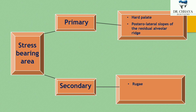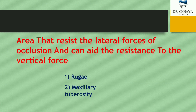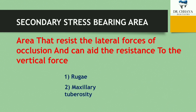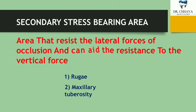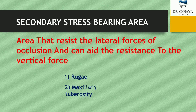The secondary stress bearing areas are also of two types: the first one is rugae, and the second one is maxillary tuberosity. The secondary stress bearing areas resist the lateral force of occlusion and can aid resistance to vertical force — surfaces that resist force, strain, or pressure brought on them during function like mastication or occlusion. Let's see them in the maxillary cast.